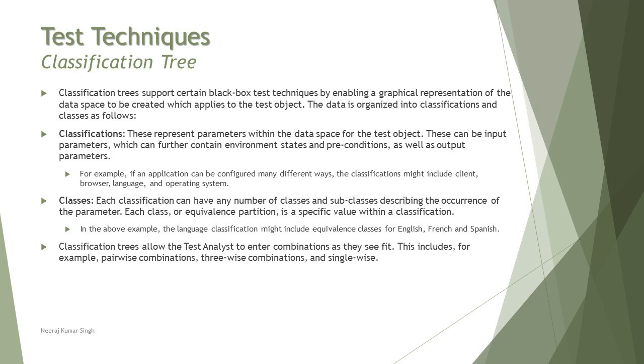The second one we are talking about is classes, where each classification can have any number of classes and subclasses describing the occurrence of the parameter—how many occurrences are possible. Now one classification being picked up can be used. For example, the language has several other classes like English, French, Spanish, and many other languages.